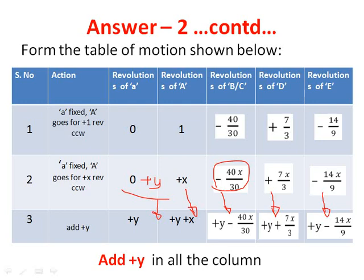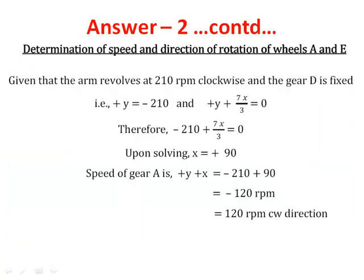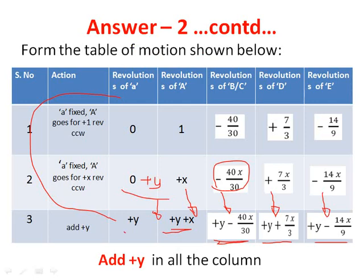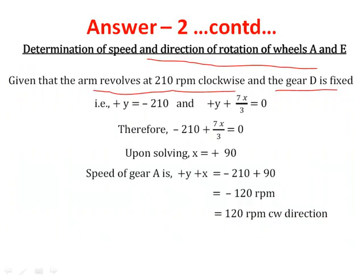Once the table of motion is complete, we look at the necessary speeds. The speed of the arm is Y, speed of gear A is X+Y, speed of compound drive BC, speed of gear D, and speed of gear E. The given condition is: the arm rotates at 210 RPM clockwise. By our sign convention, +Y = −210.